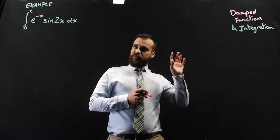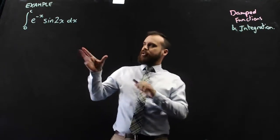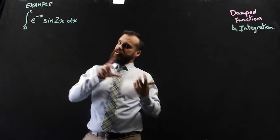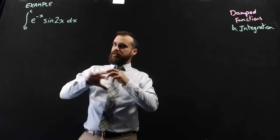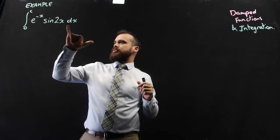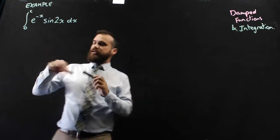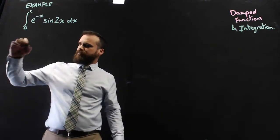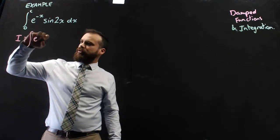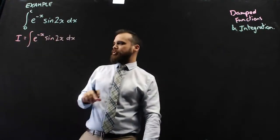We're doing damped functions again, this time integration of a damped function. Just straight into an example: the integral between c and 0 — so this isn't going to give us a numerical answer, it's just going to give us a value with c in it — of e to the negative x sine 2x with respect to x. First, let's find the indefinite integral. I'm going to let the indefinite integral equal i, so i equals the indefinite integral of e to the negative x sine 2x with respect to x.